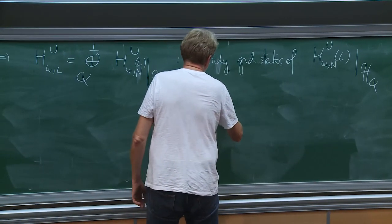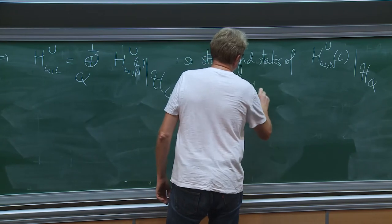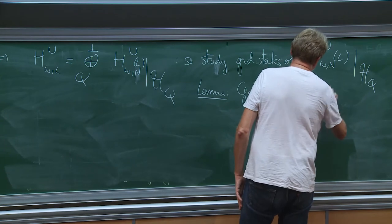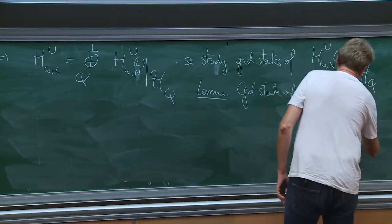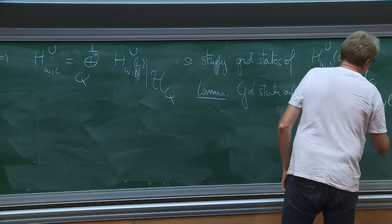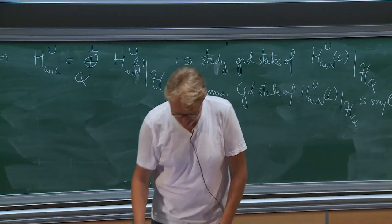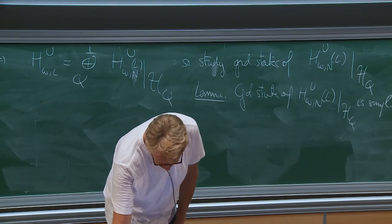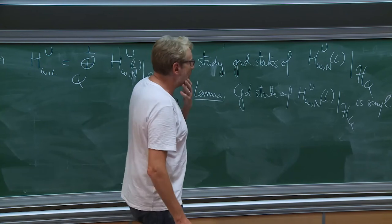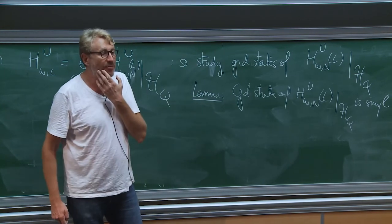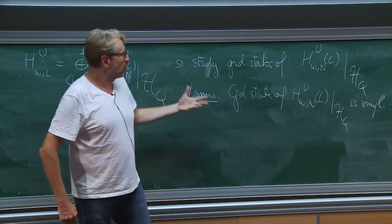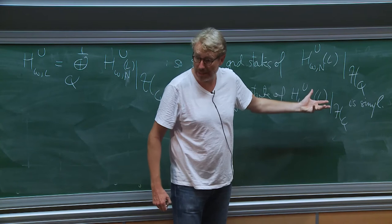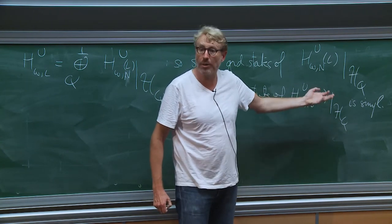Lemma: the ground state of H_{omega, N, u, L} is simple. Not all occupations q are going to give you the ground state of the whole thing. The idea now is to understand — can we find a characterization of the occupation number that gives you the lowest ground state? Now we're going to reason on the occupation numbers.